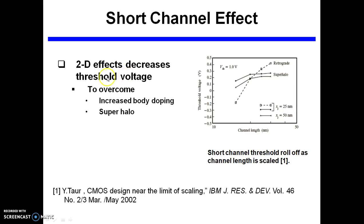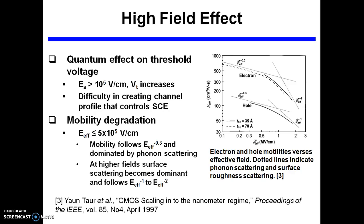As device size is scaled down, 2D effects are going to take place. To overcome these two-dimensional effects, we can have increased body doping and super-halo in the source and drain regions. But increased body doping creates a problem — we require doping of 10^18 per cubic centimeter, which is very difficult to control. Another problem is the quantum effect on threshold voltage: as the surface field increases to about 10^5 V/cm, VT is going to increase. In a small area with high doping density of 10^18 per cm³, controlling the channel profile to manage short channel effects is very difficult.